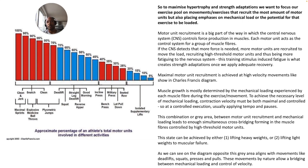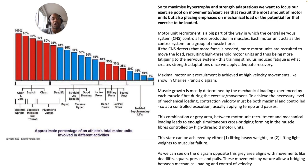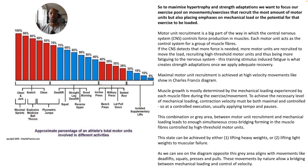Muscle growth is mostly determined by the mechanical loading experienced by each muscle fiber during the exercise. To achieve the necessary level of mechanical loading, contraction velocity must be both maximal and controlled — applying some sort of tempo or pauses. This combination — the gray area between motor unit recruitment and mechanical loading — leads to enough simultaneous cross-bridging forming in the muscle fibers controlled by high-threshold motor units. This state can be achieved by either lifting heavy weights or lifting lighter weights to muscular failure. This gray area aligns with movements like deadlifts, squats, presses, and pulls, which by nature bridge mechanical loading and control of velocity.